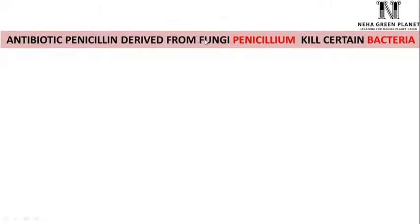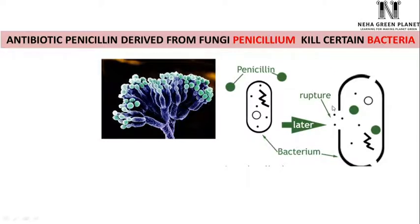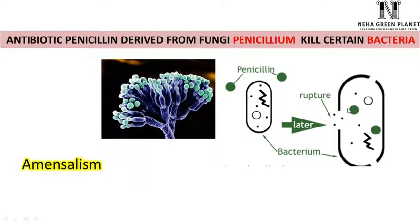Antibiotic penicillin derived from the fungus Penicillium kills certain bacteria by rupturing their cell walls. In this relationship, the bacteria are at harm and Penicillium remains basically unaffected. This can be considered under amensalism — it is a zero-minus relationship: negative for the bacteria but neutral for the Penicillium.